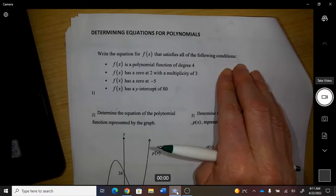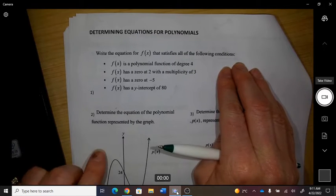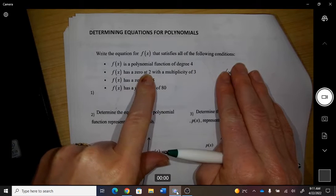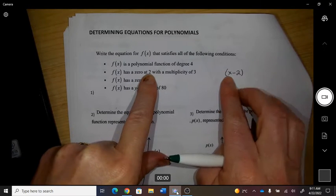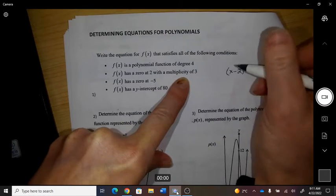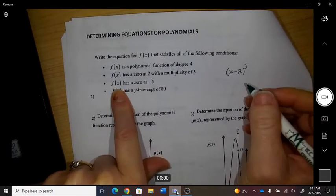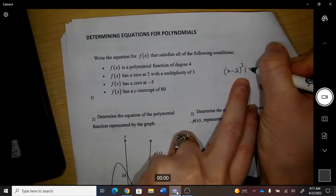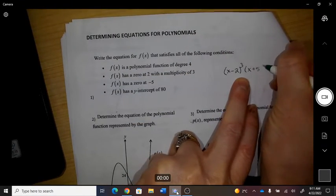Okay, so writing equations for polynomials. It's a fourth degree, it has a zero at 2, so I need the factor x minus 2 with a multiplicity of 3, and it has a zero at negative 5, so I need an x plus 5.